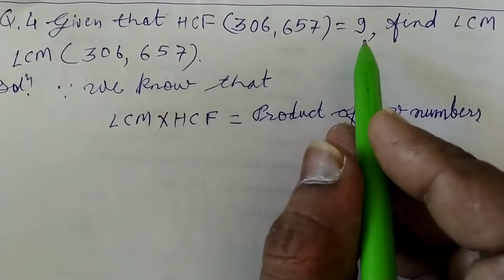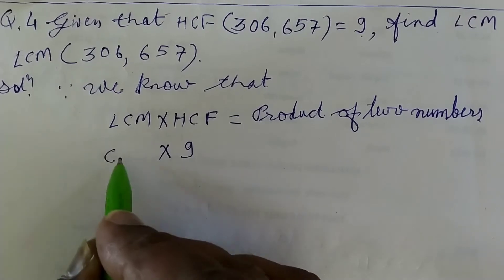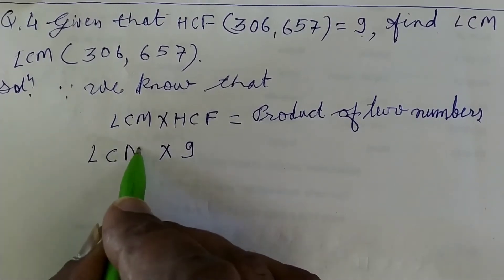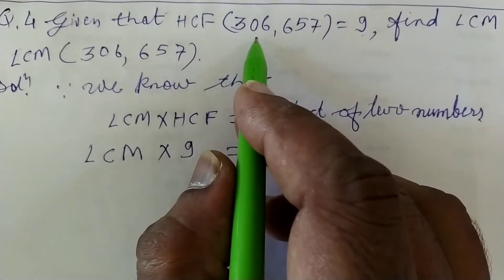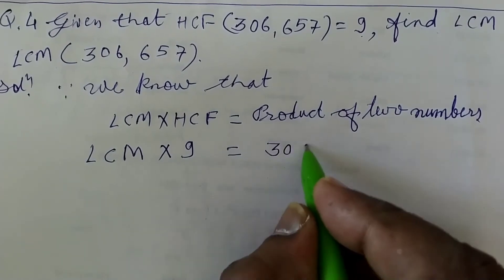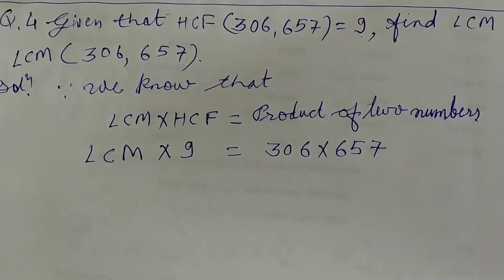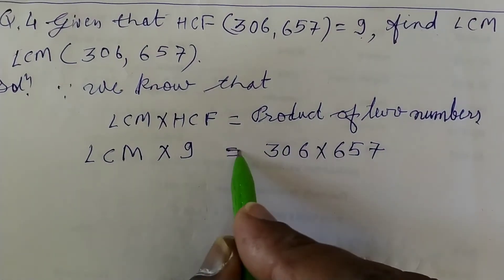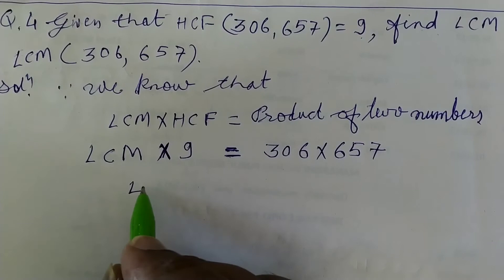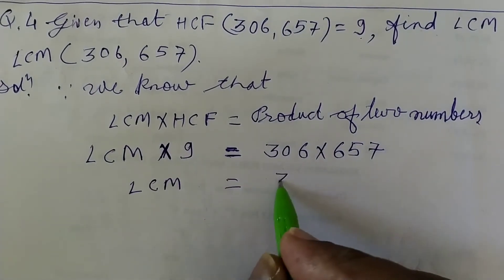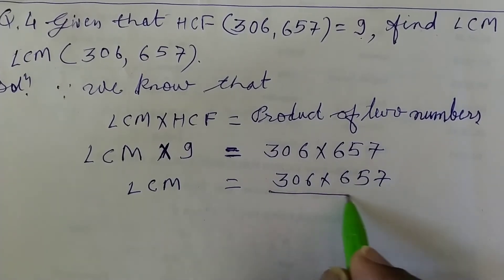Here we have given HCF is 9. We will write LCM we will find is equal to product of two numbers, 306 and 657. It is clear from this equation, here 9 is multiply. LCM is equal to 306 multiply 657 divided by 9.